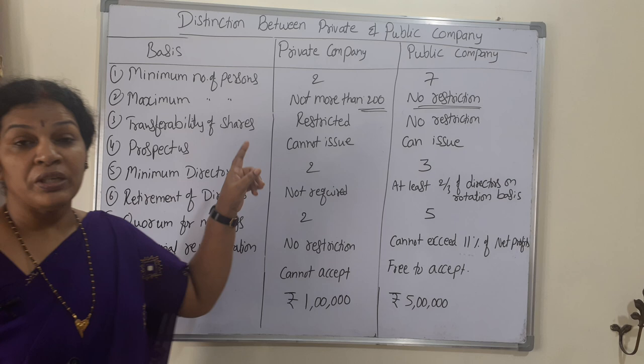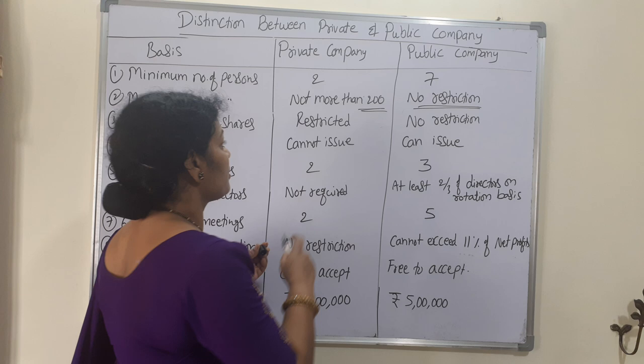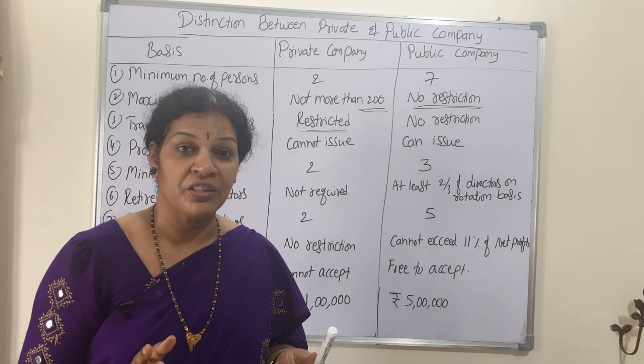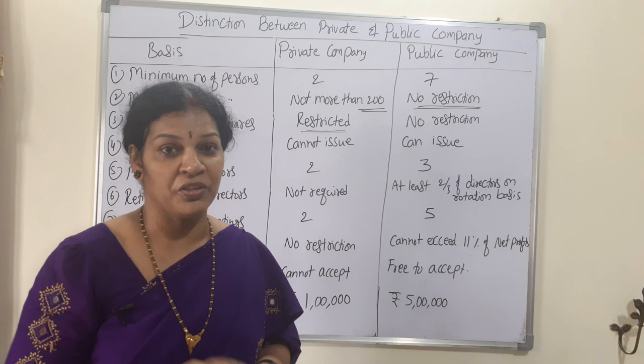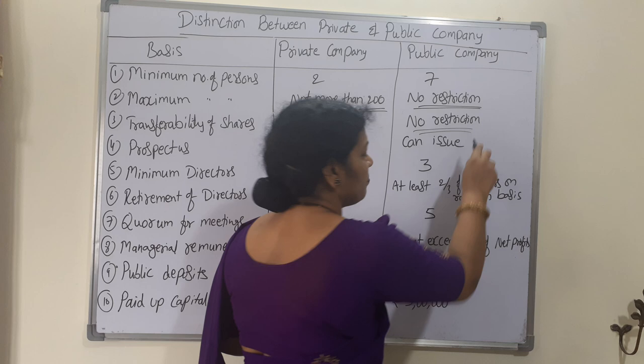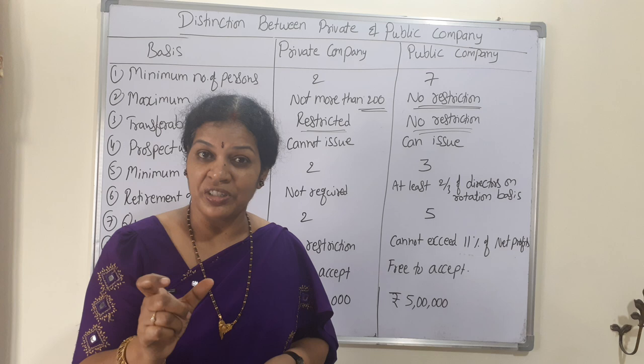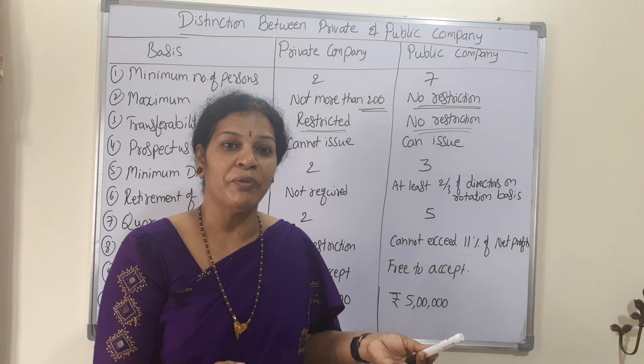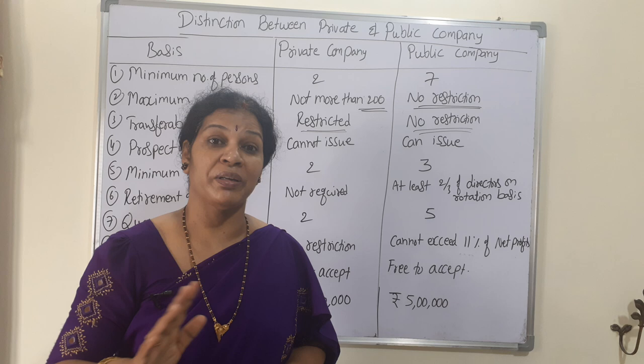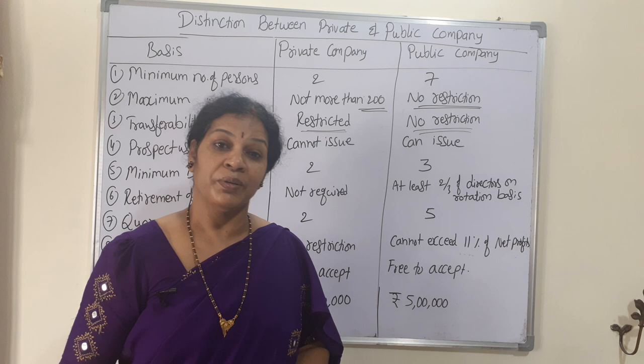Next is transferability of shares. In a private company, shares cannot be transferred freely — there are restrictions, and acceptance must be obtained before a transfer can happen. In a public company, there is no restriction; you can transfer shares at any time to anyone without requiring anyone's permission. Some shares have no name written on them and can be transferred very easily.